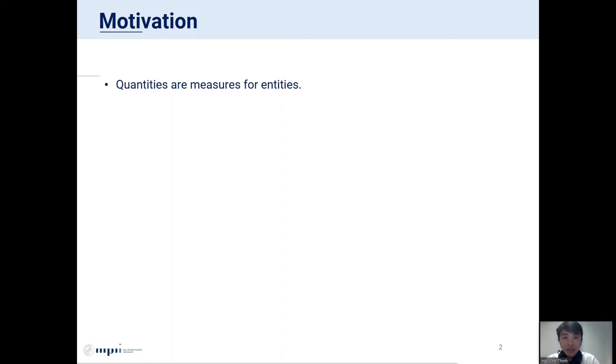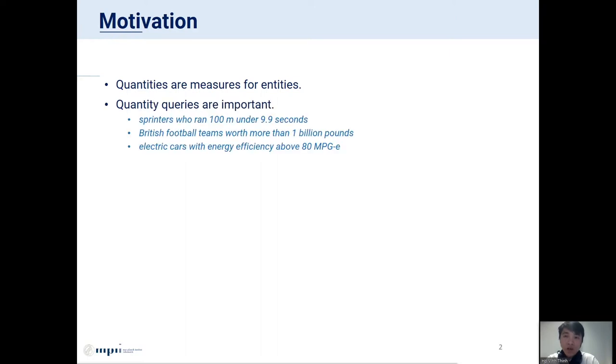Quantities are financial, physical, and other measures denoting important properties of entities, such as revenue of companies or energy efficiency of cars. Quantities usually appear in quantity queries, which are an important building block for comparative search. For example, we can ask for sprinters who run 100 meters under 9.9 seconds, or football teams worth more than 1 billion pounds.